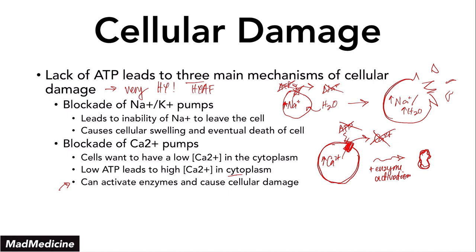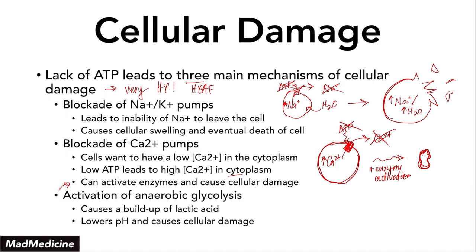Finally, the last mechanism of cellular damage because of low ATP is activation of anaerobic glycolysis. This is going to lead to a buildup of lactic acid, and lactic acid is an acidic substance. Because it is acidic, you are going to have a decrease in pH because you have an increase in hydrogen concentration intracellularly. That also is going to cause a lot of damage — it's going to disrupt a lot of the normal processes in the cell, and when the normal processes don't work, it's going to cause the cell to go into complete death mode. Those are the three main mechanisms.